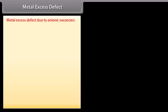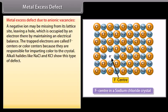Metal excess defect due to anionic vacancies: A negative ion may be missing from its lattice site, leaving a hole which is occupied by an electron, thereby maintaining an electrical balance. The trapped electrons are called F-centers or color centers because they are responsible for imparting color to the crystal. Alkali halides like NaCl and KCl show this type of defect. Example: